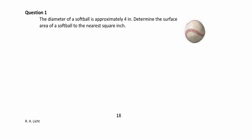The first problem says the diameter of a softball is approximately four inches — determine the surface area of a softball to the nearest square inch. So we have our softball, and we're told the diameter, from one side to the other, is four inches. Let's write down our equation: surface area is equal to four pi r squared. We see right away that we need r, not d.